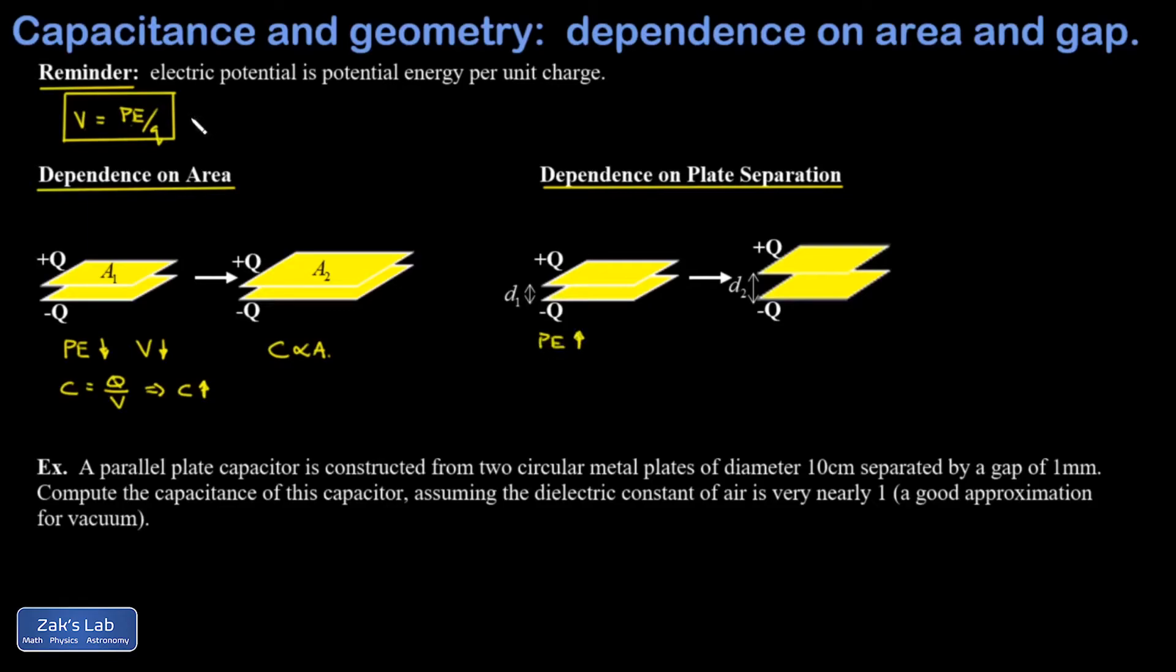If electric potential is potential energy per unit charge, then that means electric potential just went up. Looking at the definition of capacitance as C equals Q over V, a bigger V means a smaller C, so the capacitance just went down.